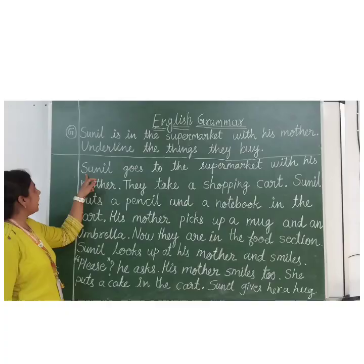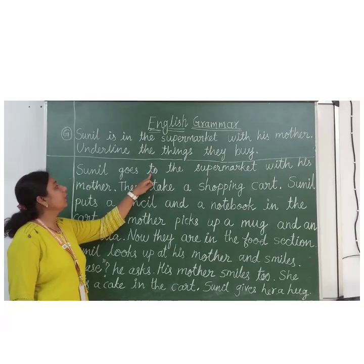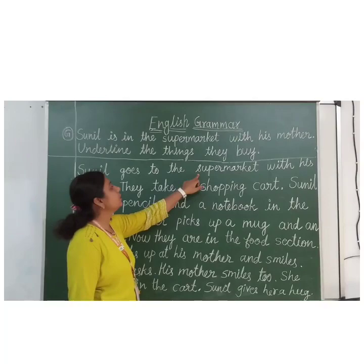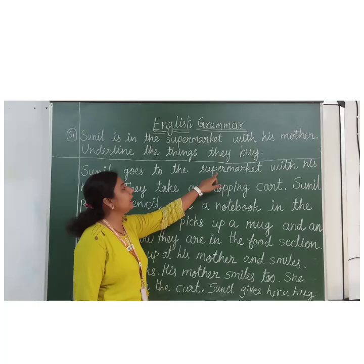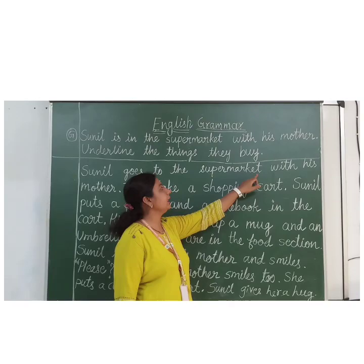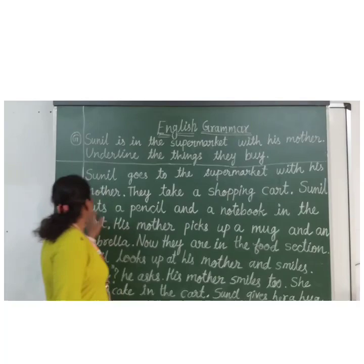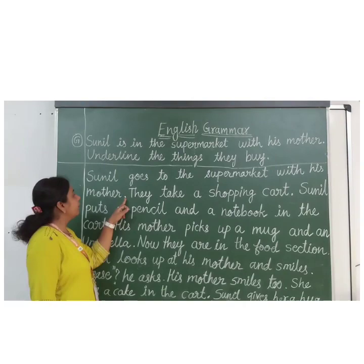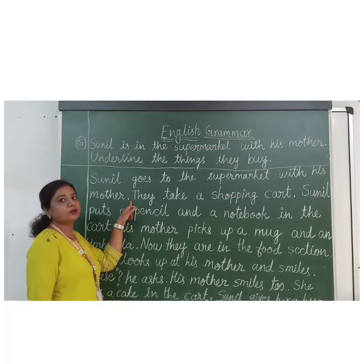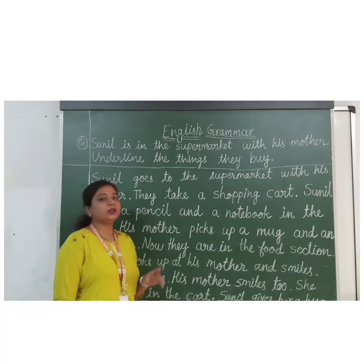Now I am reading slowly so you can understand easily. S-U-N-I-L. Sunil goes to the supermarket. S-U-P-E-R — super — M-A-R-K-E-T — market. With his mother. Full stop. When your sentence is complete, we have a full stop. Sunil — name of a boy — went to the supermarket with his mother.